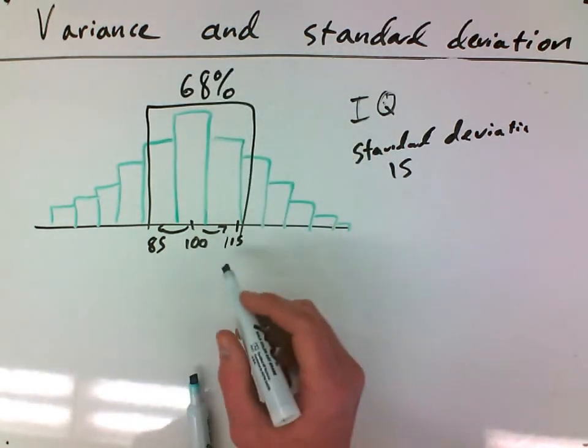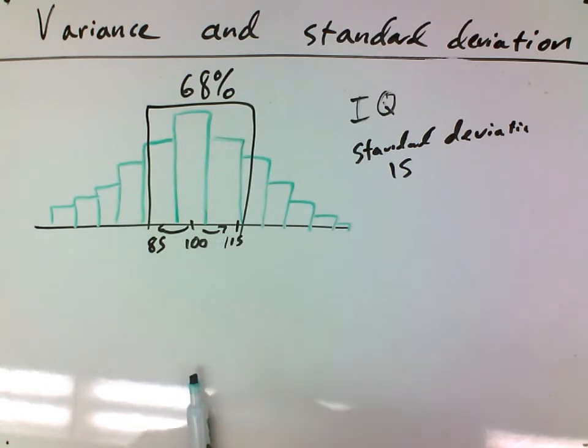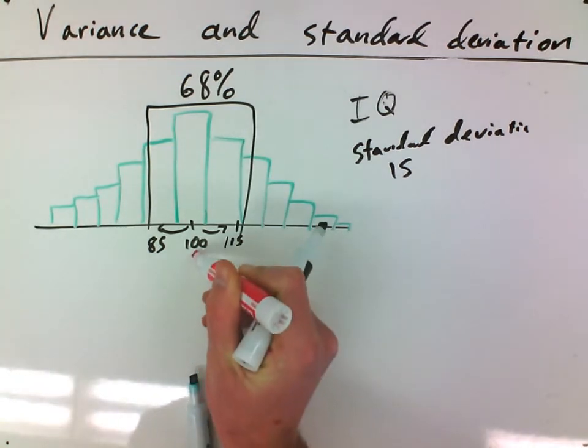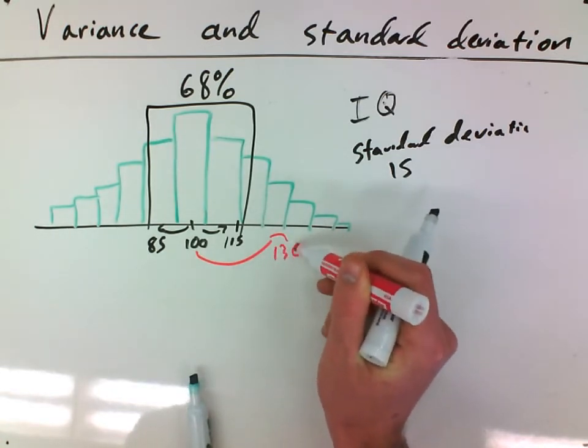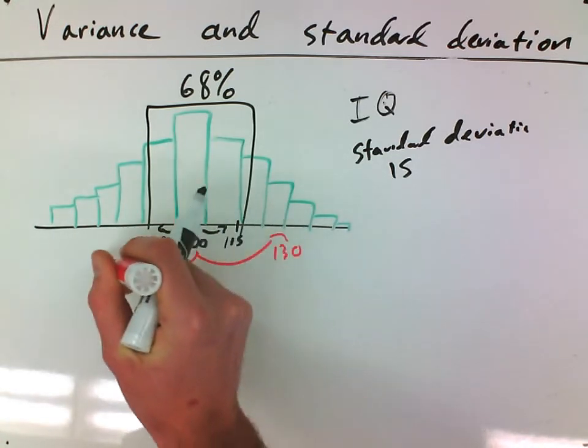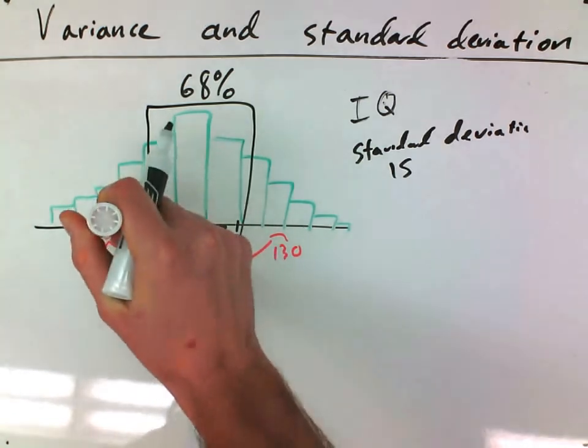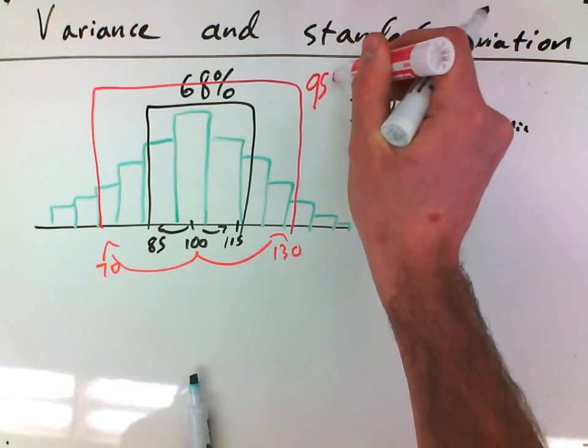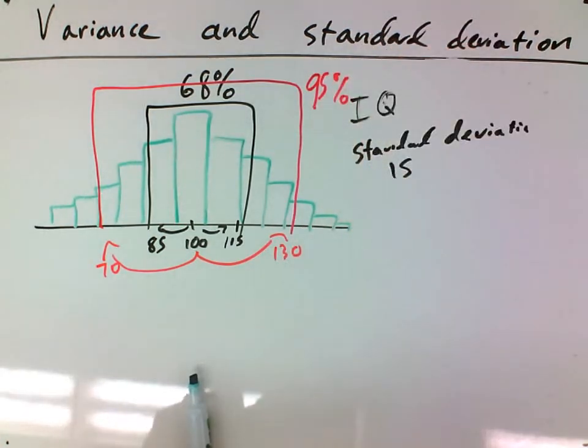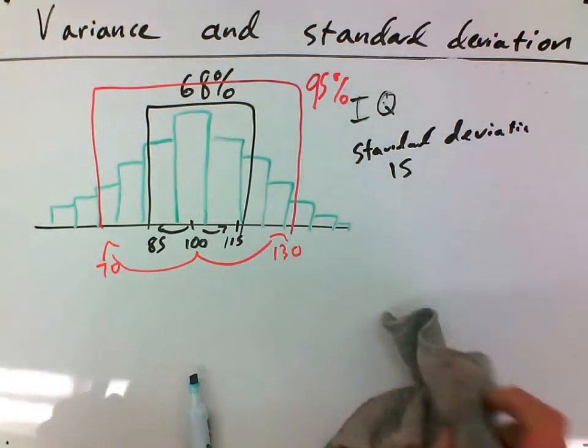I can do that one better. If I go two standard deviations up, so 15 times 2 is 30, so an IQ of 130 to 70, this captures 95% of the data. If I go to three standard deviations out, it's guaranteed to capture 99% of the data.